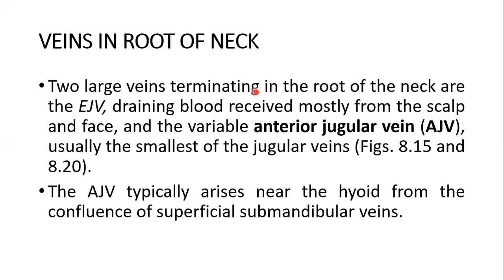There are two large veins that terminate in the root of the neck: the external jugular vein and the anterior jugular vein. These two external jugular veins mostly drain blood from the scalp and face. If you go back to my lecture on the anatomy of the scalp and the anatomy of the face, you will come to know how this external jugular vein is formed.